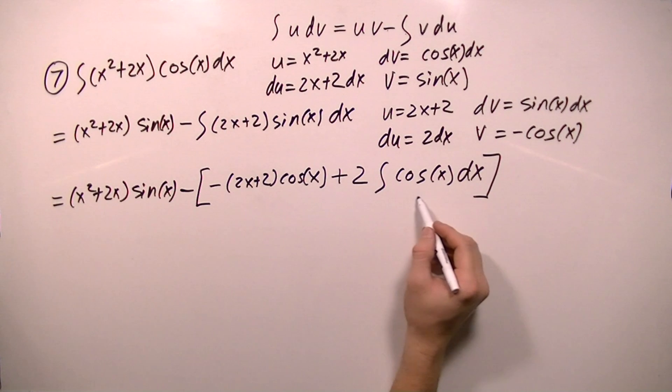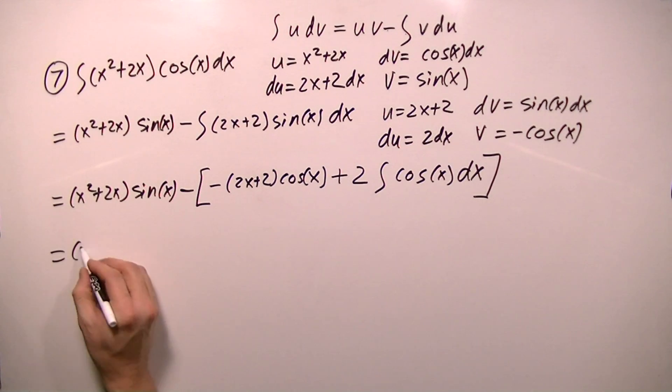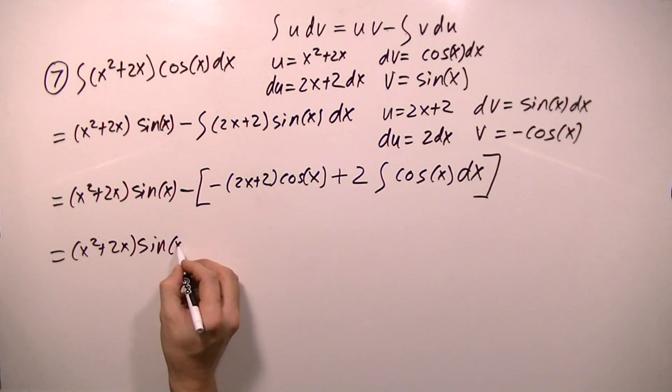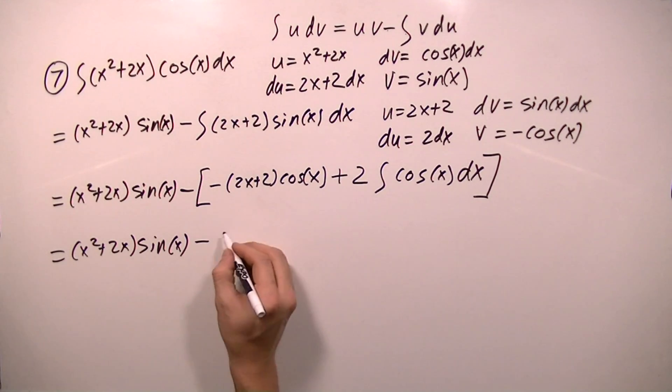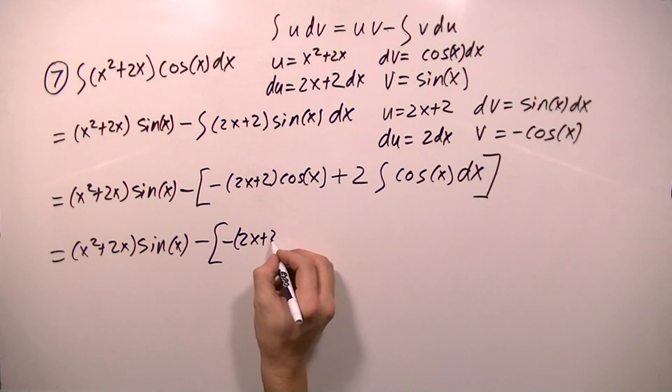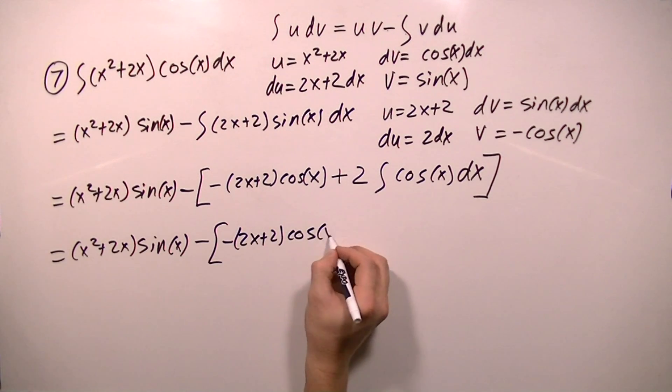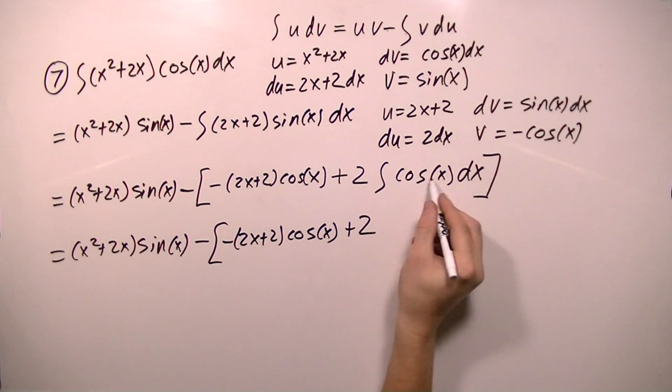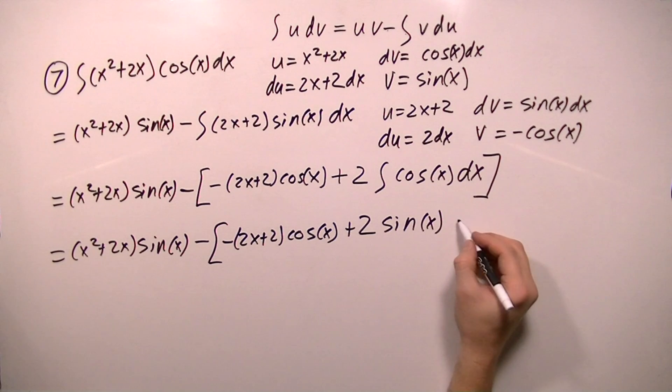So now this is in a form that I can easily integrate. I can integrate cosine x. So I'm going to rewrite this, x squared plus 2x, sine x, minus my bracket, minus 2x plus 2, cosine x, plus 2, and the integral of cosine x is sine x, and close my bracket.